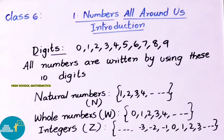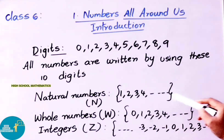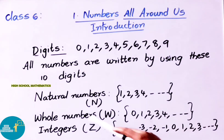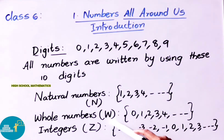Next, what are whole numbers? If we add 0 to the natural numbers set, that number set is called whole numbers. We denote whole numbers with the capital letter W.